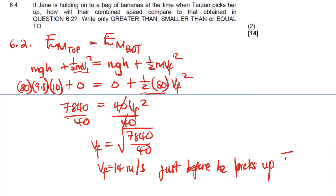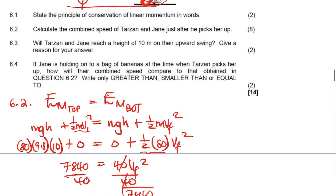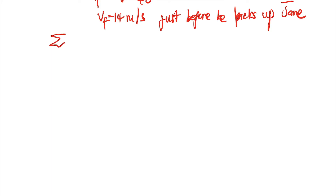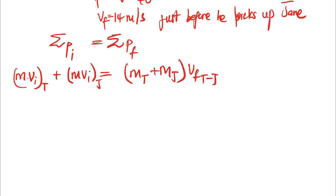Now we have that velocity and we want the velocity of both of them after Tarzan picks up Jane. We use conservation of momentum: momentum before equals momentum after. Before the collision, we look at the momentum of Tarzan and the momentum of Jane separately. After the collision, their masses are combined — mass of Tarzan plus mass of Jane — and they move off together with a final velocity v_TJ.